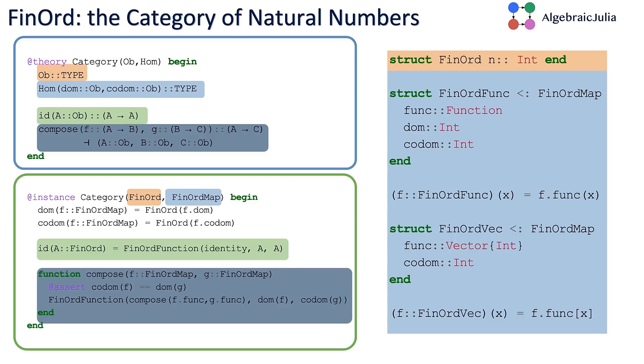Once you have a theory like a category and a struct, you can make an instance where you say that FinOrd and FinOrdMap are going to form an instance of a category. Here's how you calculate the domains and codomains, the identity, and the composition rule. You check that the domain and codomain match with the assert, and then you compose them as functions and calculate the right domain and codomain.